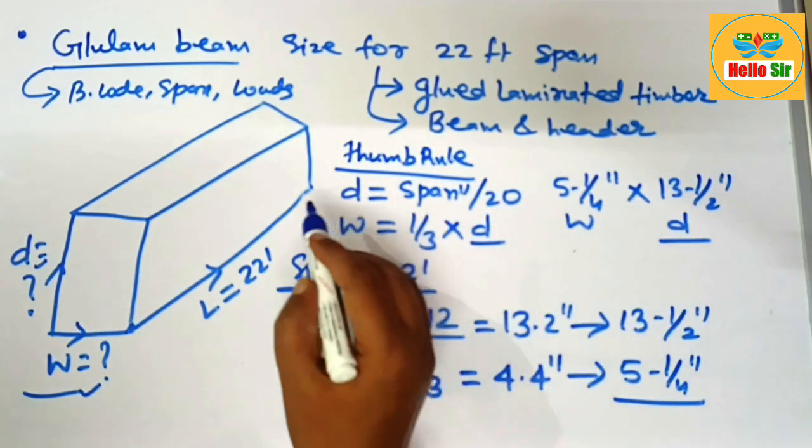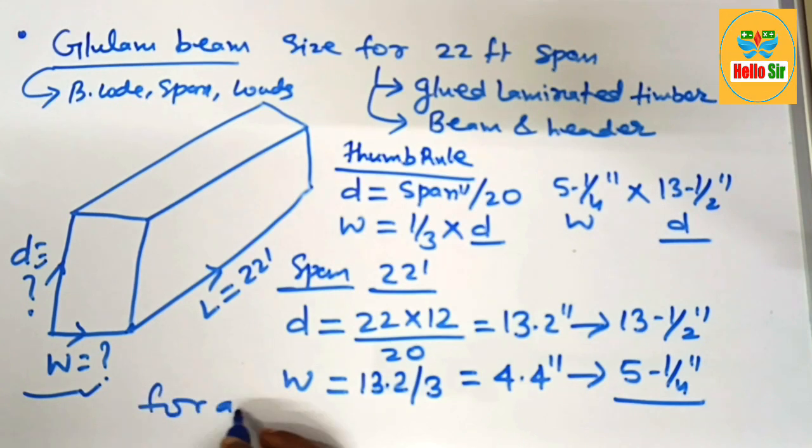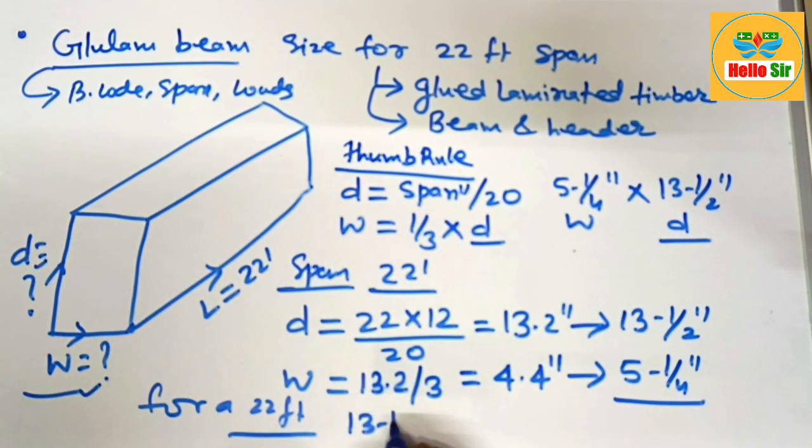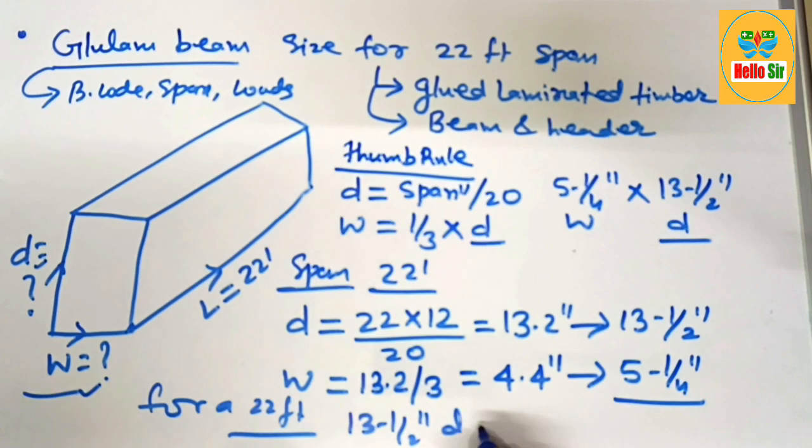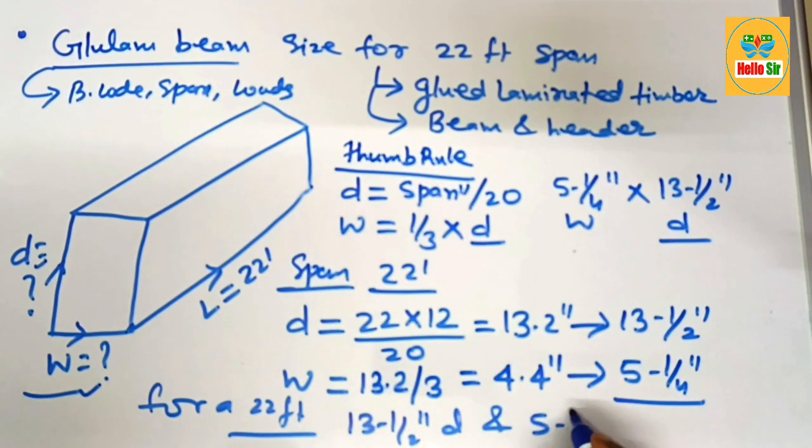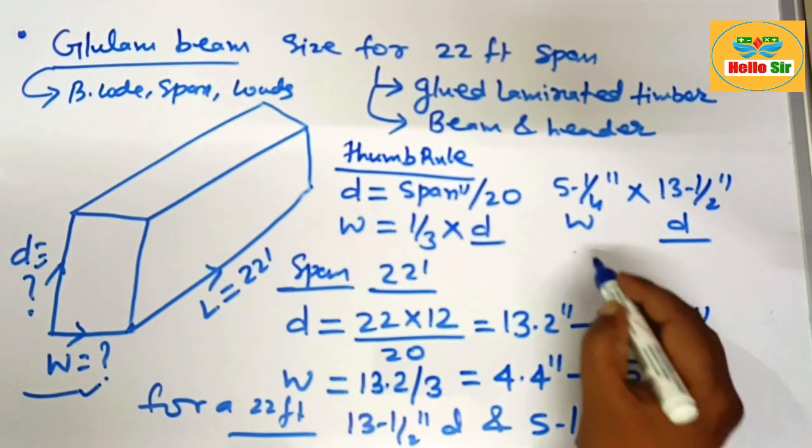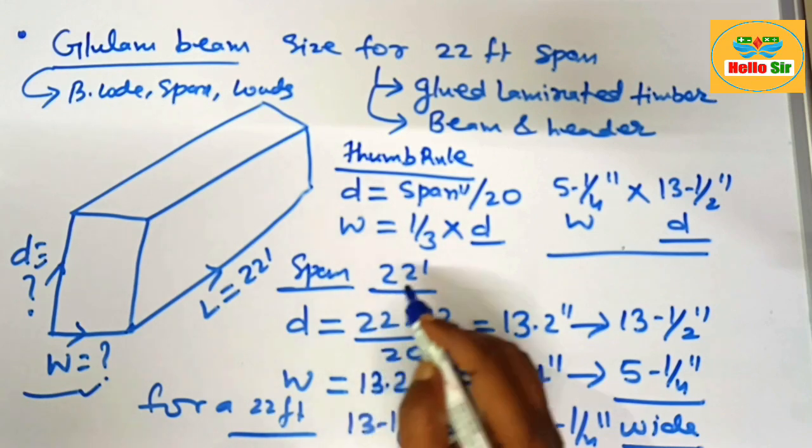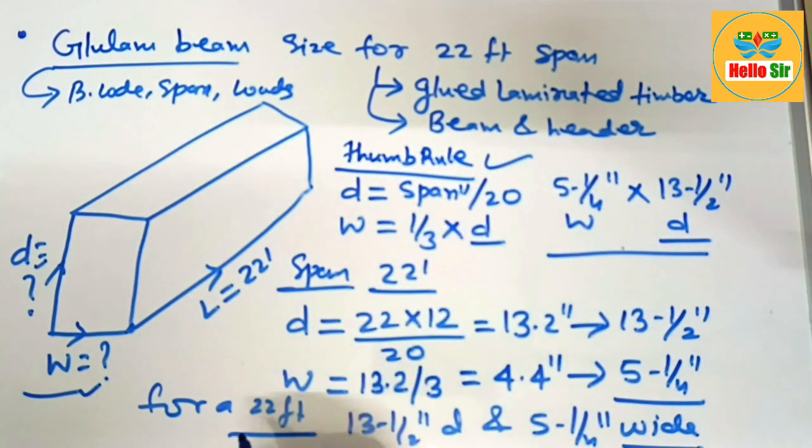So for a 22 foot span the correct glulam beam size should be 13 and half inches deep and 5 and 1/4 inches wide. This is correct glulam beam size required for 22 foot span according to thumb rule. Thank you.